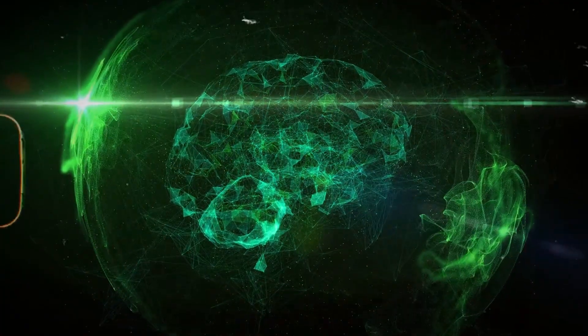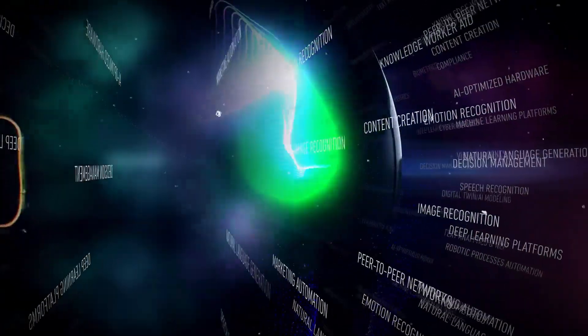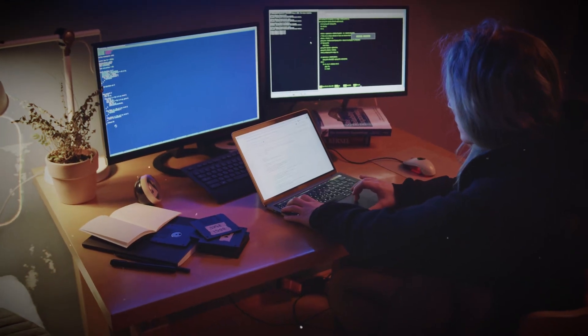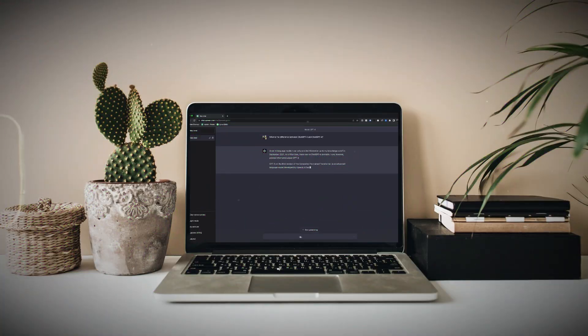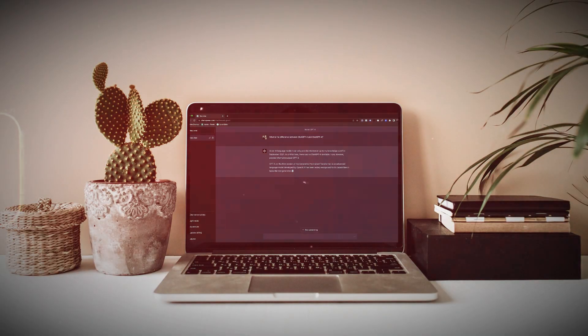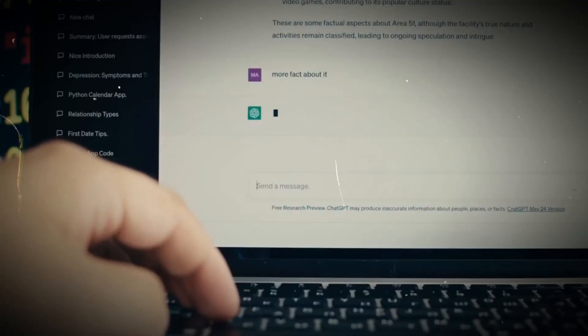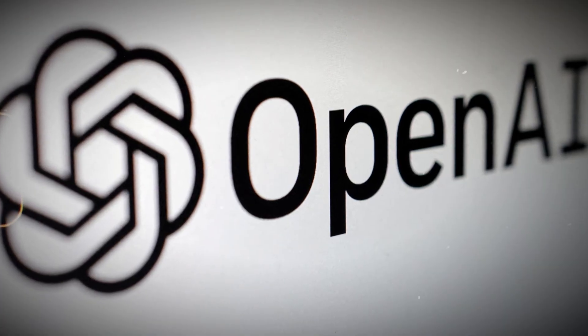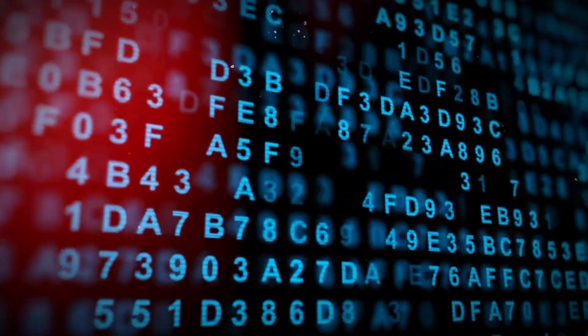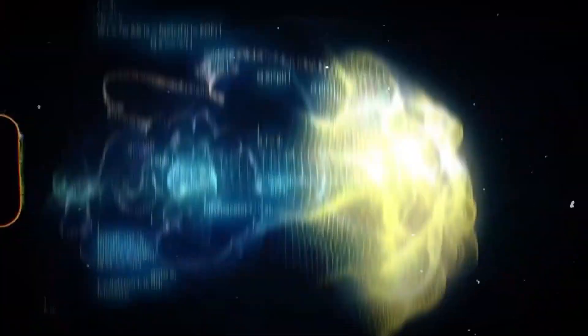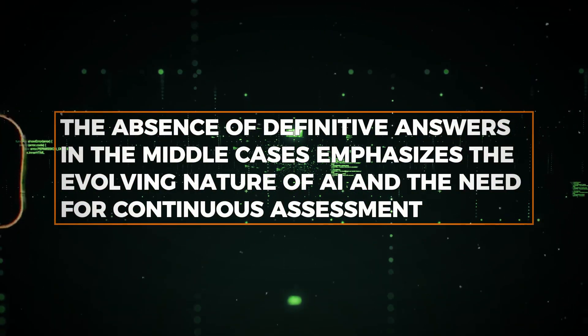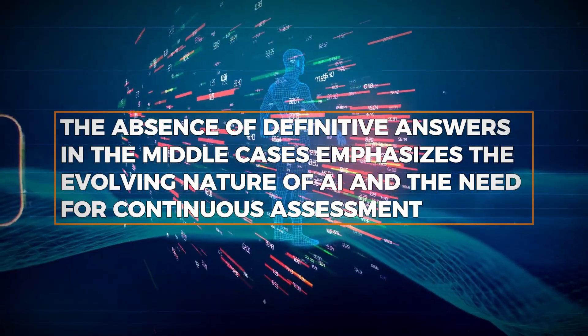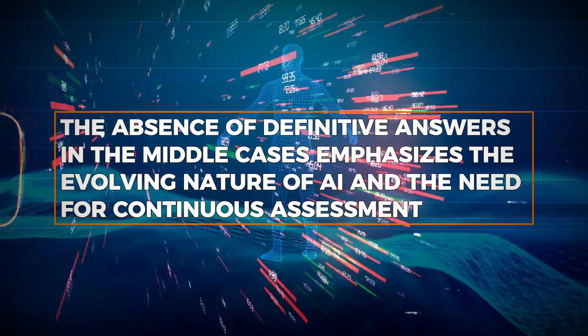Sam Altman's acknowledgment of uncertainties surrounding the middle cases in AI development underscores the complexity of navigating uncharted territory. In the realm of artificial intelligence, middle cases represent scenarios that fall between extremes, posing challenges that lack clear and definitive solutions. This recognition reflects OpenAI's commitment to transparency and an honest assessment of the intricate interplay between technology, institutions, and societal responses. The absence of definitive answers in the middle cases emphasizes the evolving nature of AI and the need for continuous assessment.